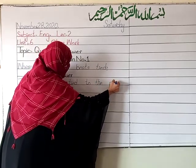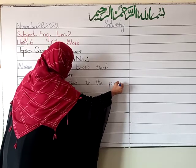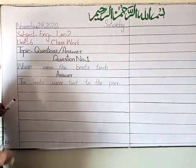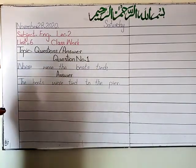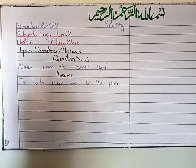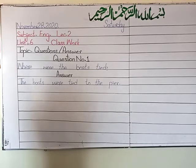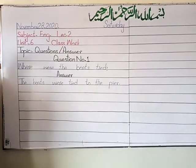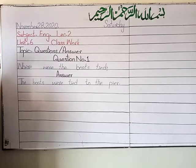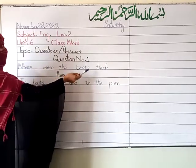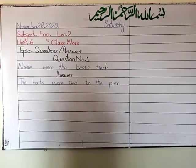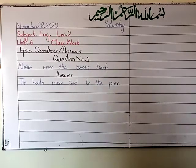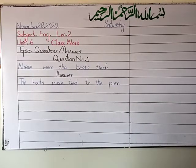The boards were tied to the pier. Now repeat after me: Question is — Where were the boards tied? Answer is — The boards were tied to the pier. The boards were tied to the pier. The boards — which were the boats — were tied to the pier.